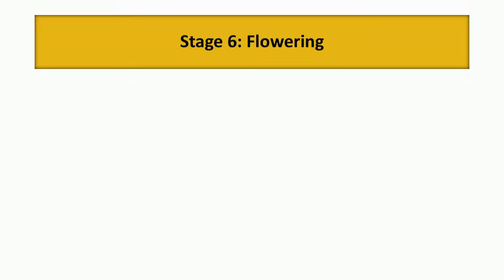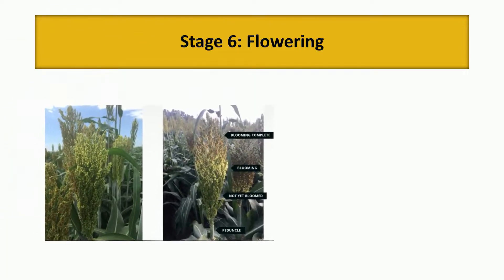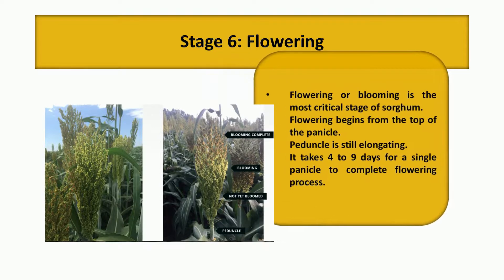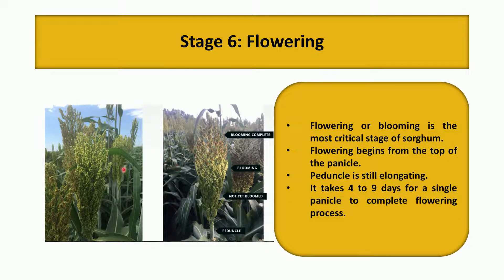Coming to the sixth stage, the flowering stage — this is the most critical stage of sorghum. Flowering begins at the top of the panicle, and the peduncle is still elongating. It takes four to nine days for a single panicle to complete the whole flowering process.